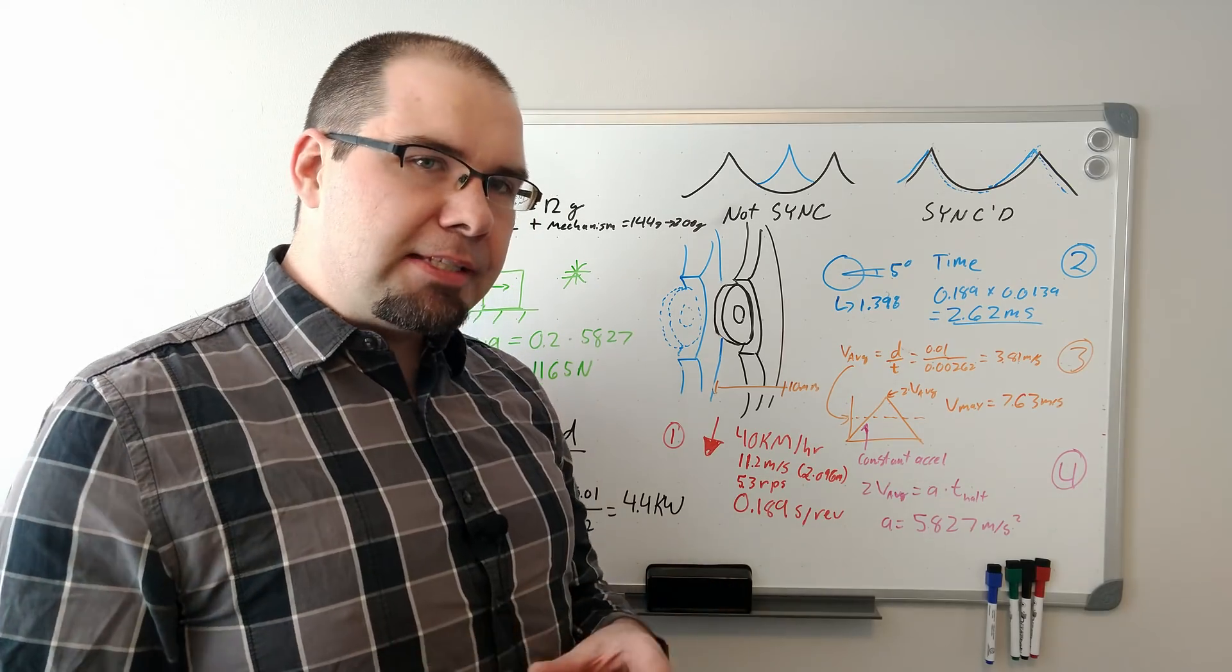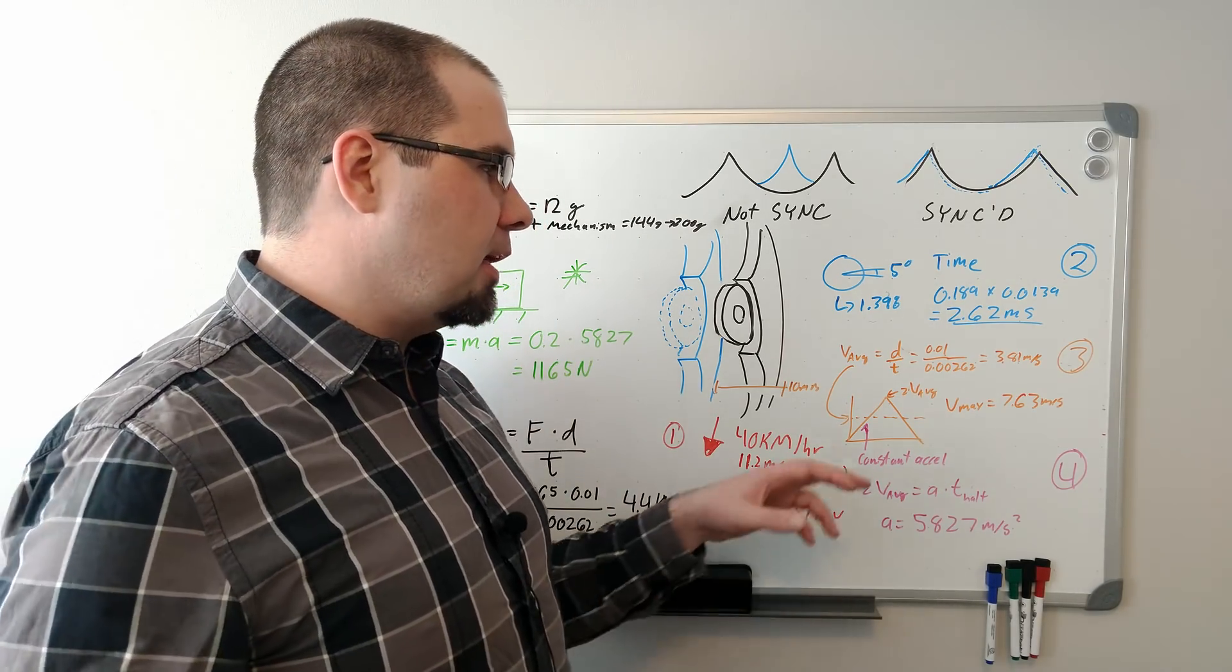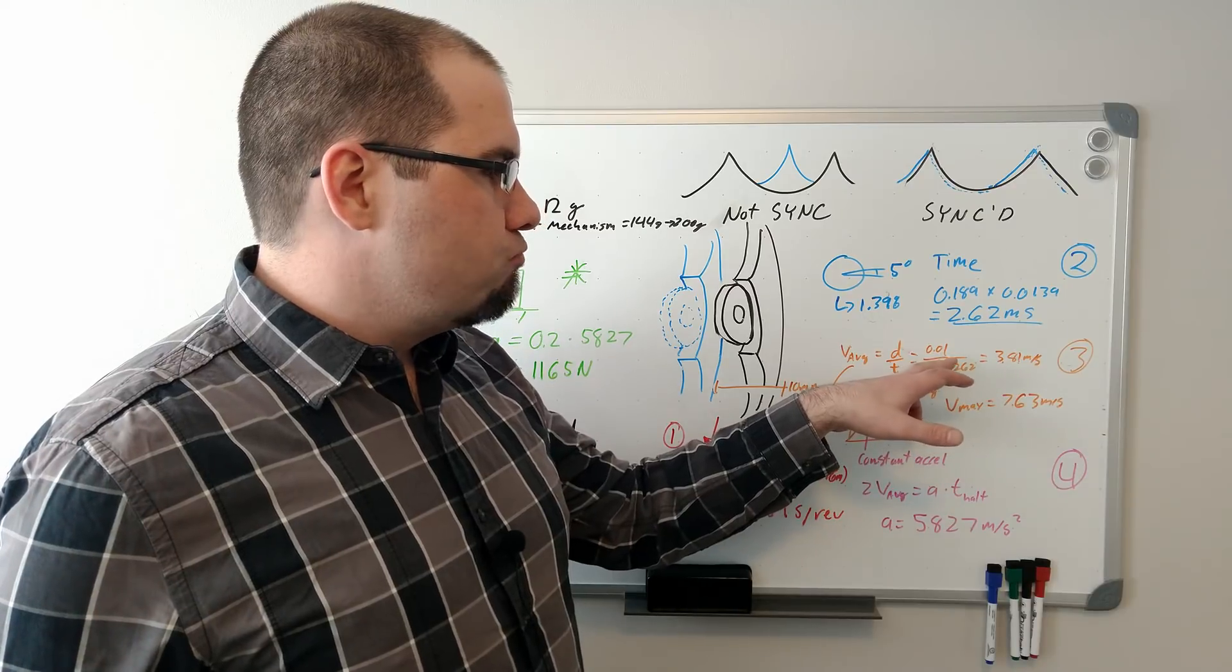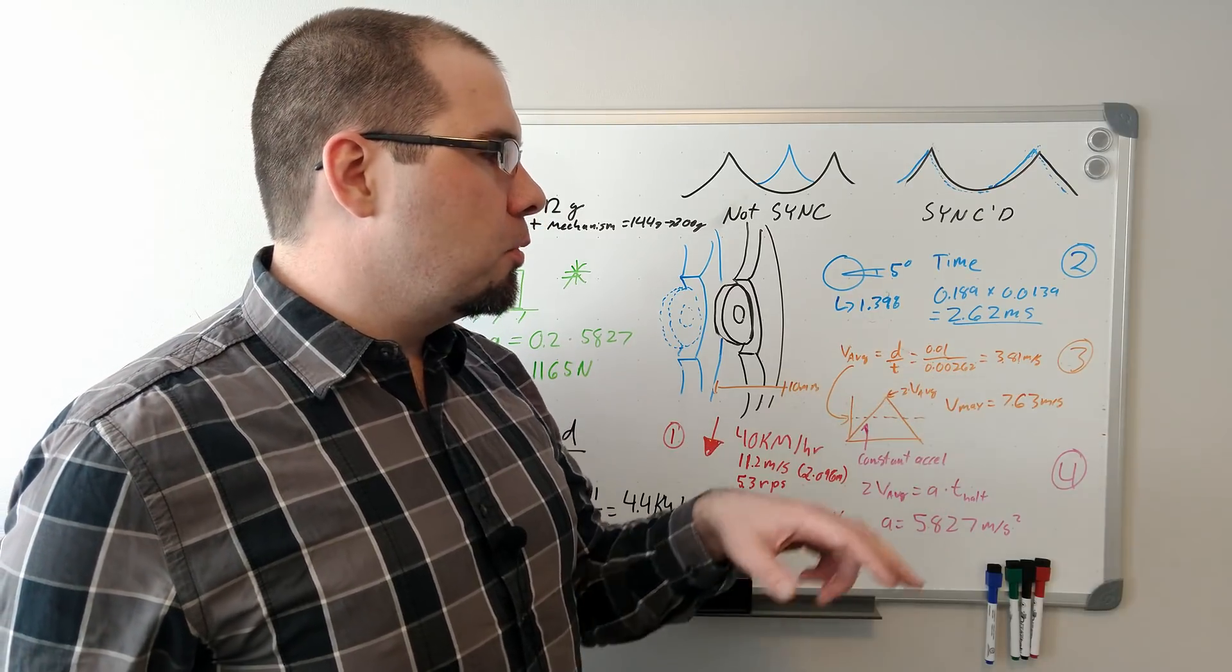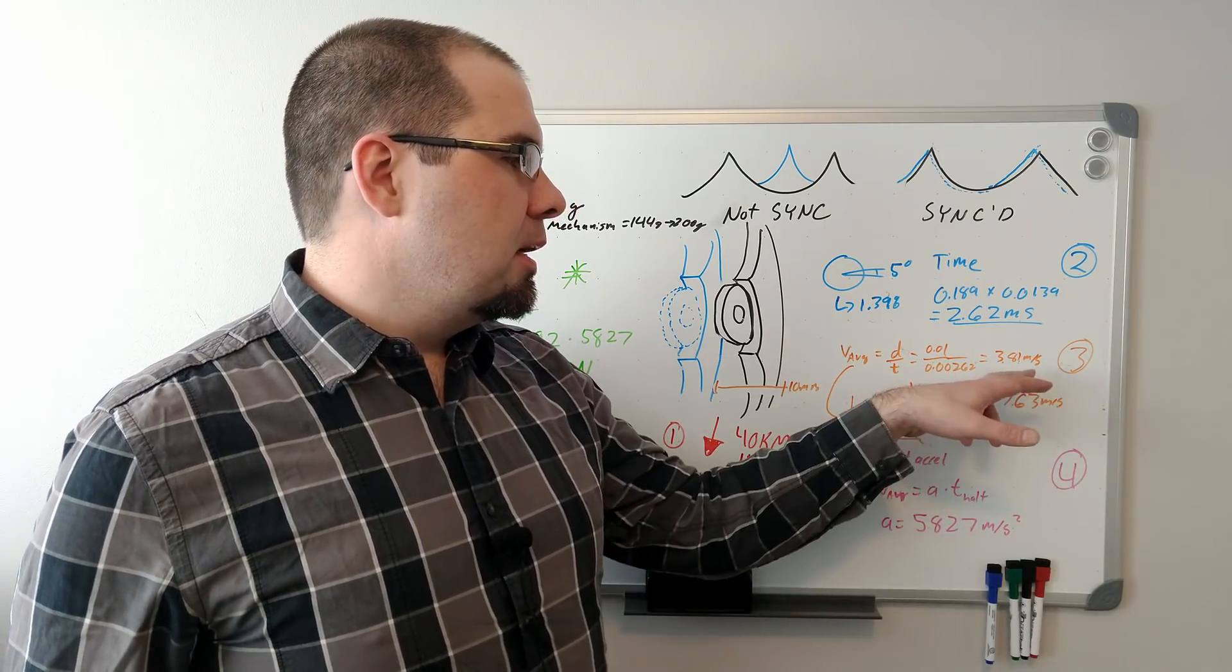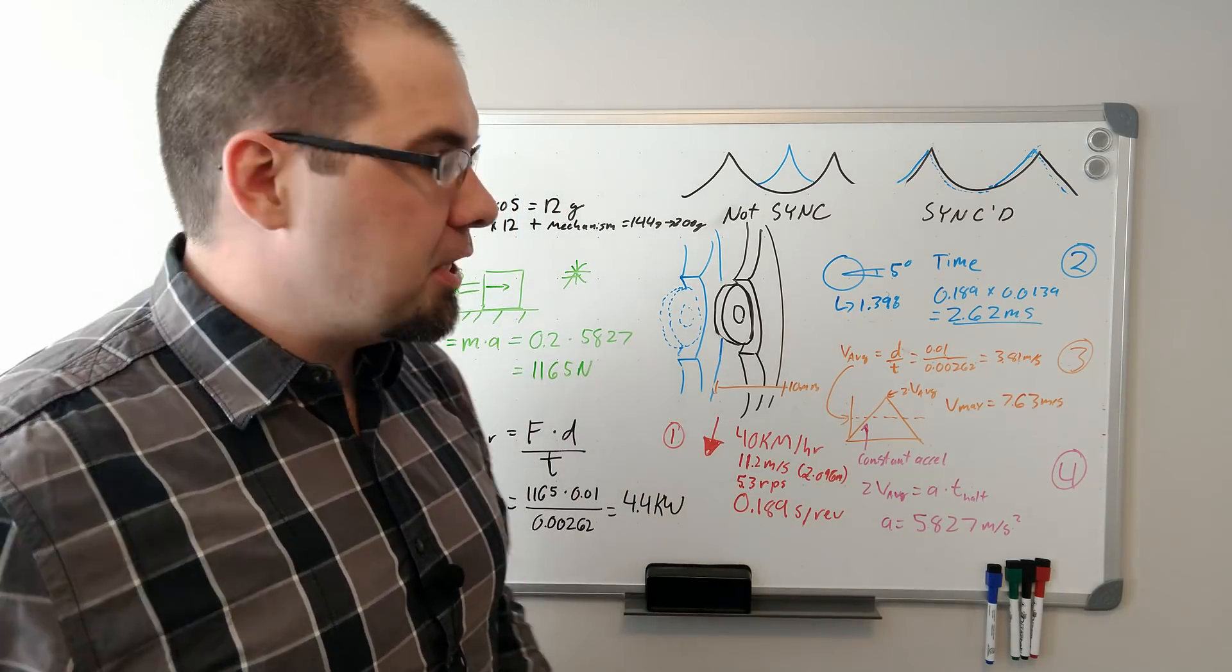So at 10 millimeters, we need an average velocity for that movement. I'm simplifying this a bit. You can have non-linear stuff, but I want an average velocity of 10 millimeters divided by 2.62 milliseconds. Back to their base units is 3.81 meters per second.